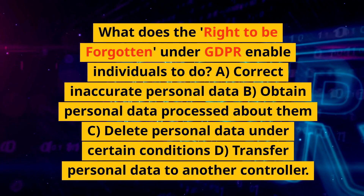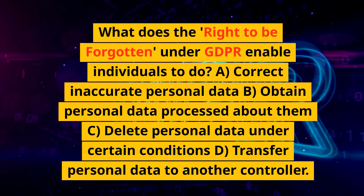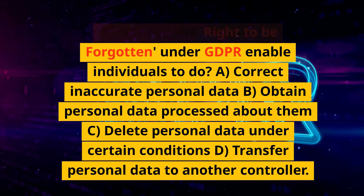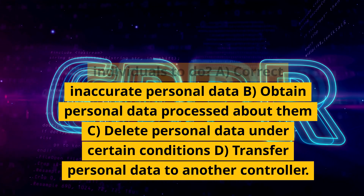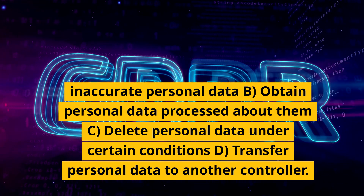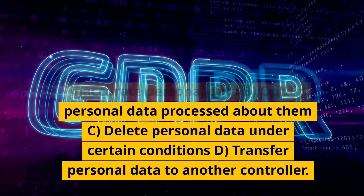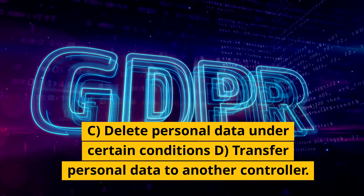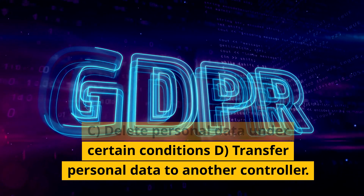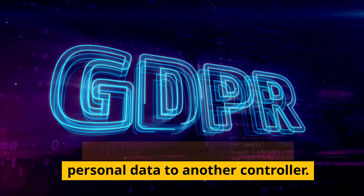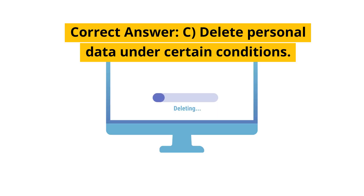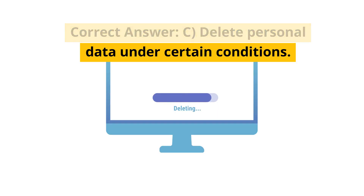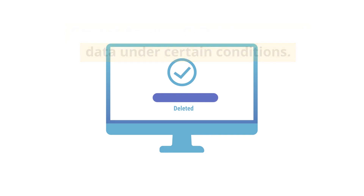What does the right to be forgotten under GDPR enable individuals to do? A. Correct inaccurate personal data. B. Obtain personal data processed about them. C. Delete personal data under certain conditions. D. Transfer personal data to another controller. Correct answer: C. Delete personal data under certain conditions.